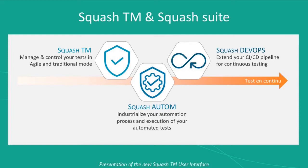We have three Squash modules. The first one, which we'll focus on today, is Squash TM — TM standing for Test Management. It is used to manage and monitor manual tests in agile or traditional mode, using methodologies such as TMap, ISTQB, and SAFe. Next is Squash Auto, a module to automate and industrialize your automation process and execute automated tests. Then there's Squash DevOps, which extends your CI/CD pipeline for continuous testing. These last two modules won't be covered in depth today, but you can contact us with questions.